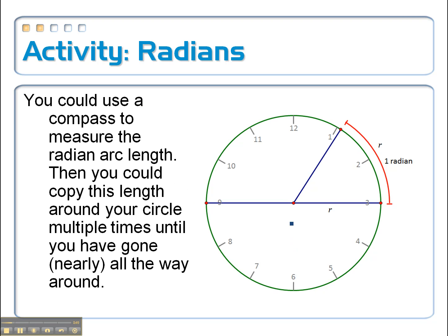So if you had a compass, you could measure the distance from, say, the 3 all the way up to this one radian mark, and then with that same exact compass setting, just continue it all the way around the circle.